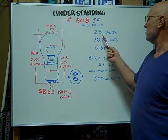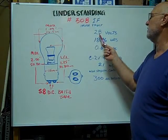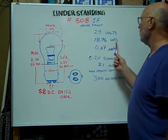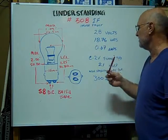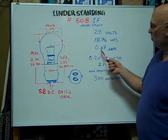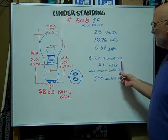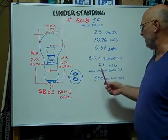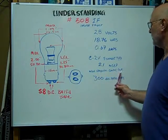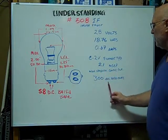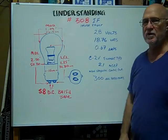The volts are rated at 28 volts, the watts are 18.76, the amps are 0.67, the filament type is a C2V, the mean spherical candle power is 21, the average rated hours are 300 hours.